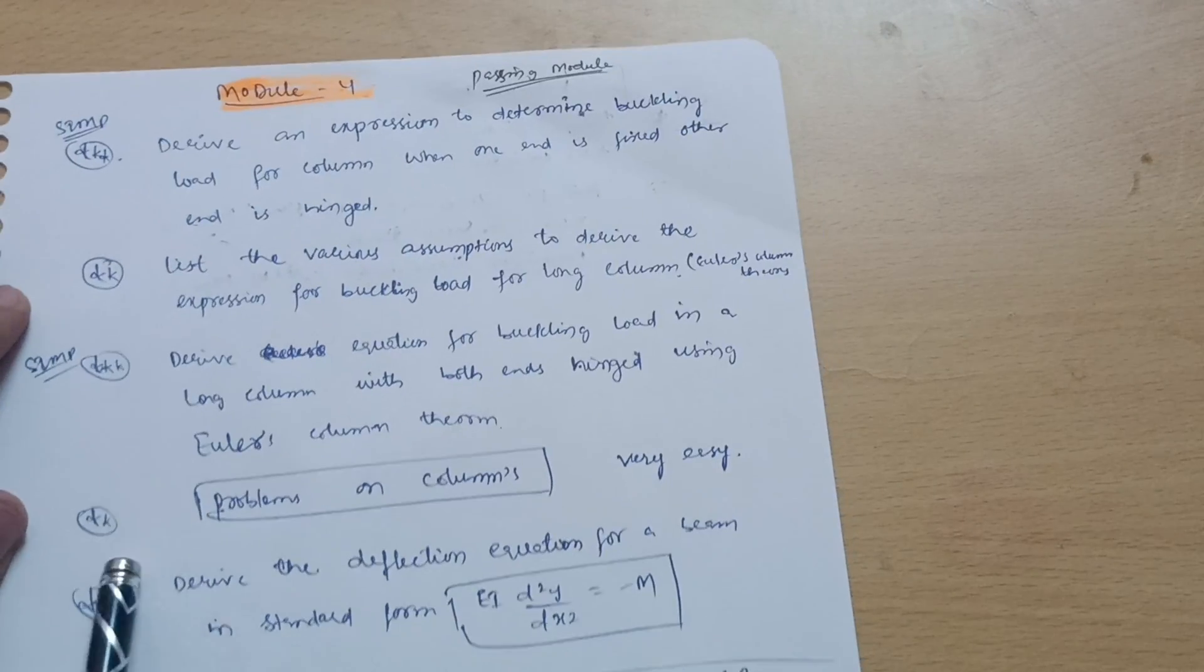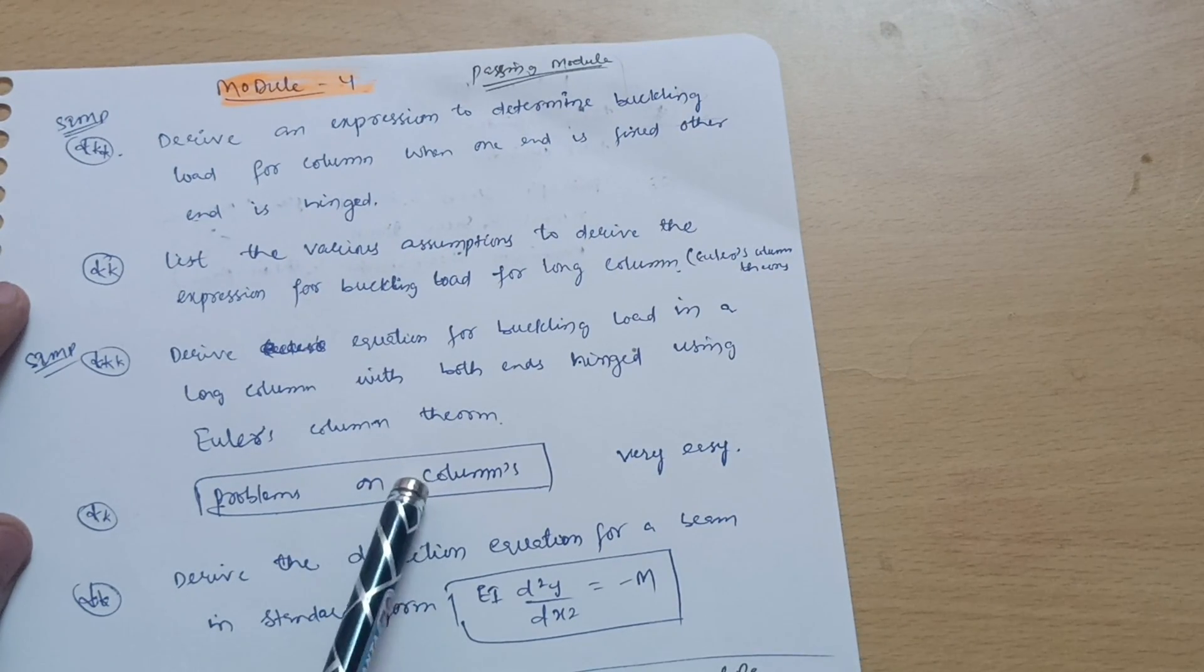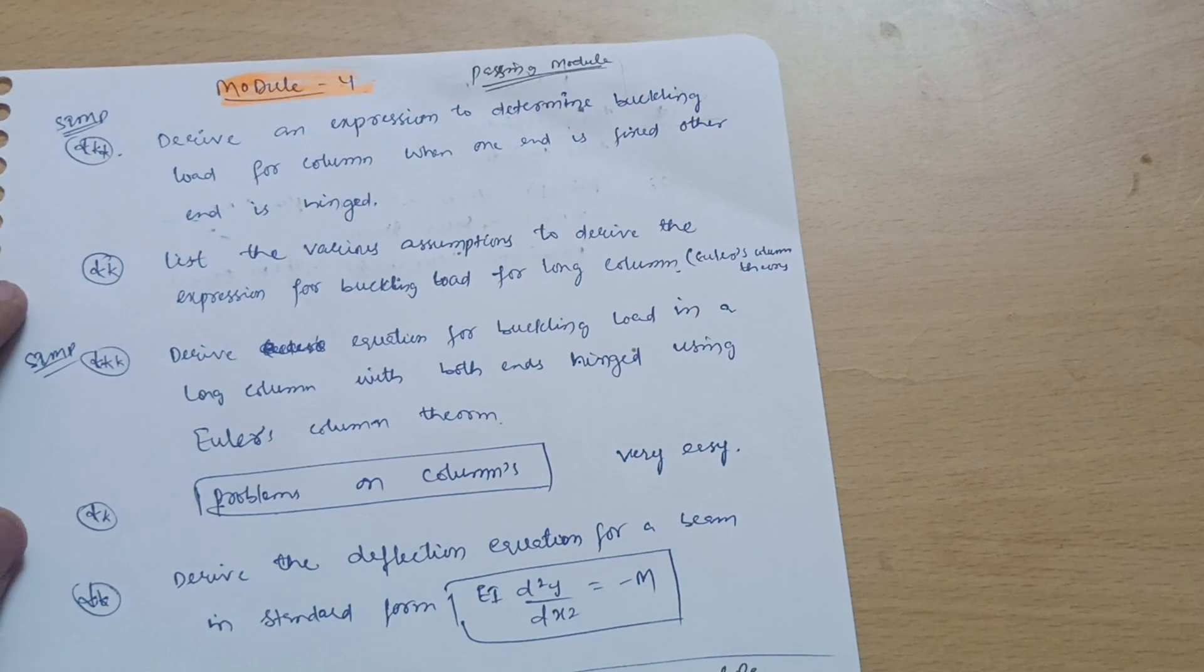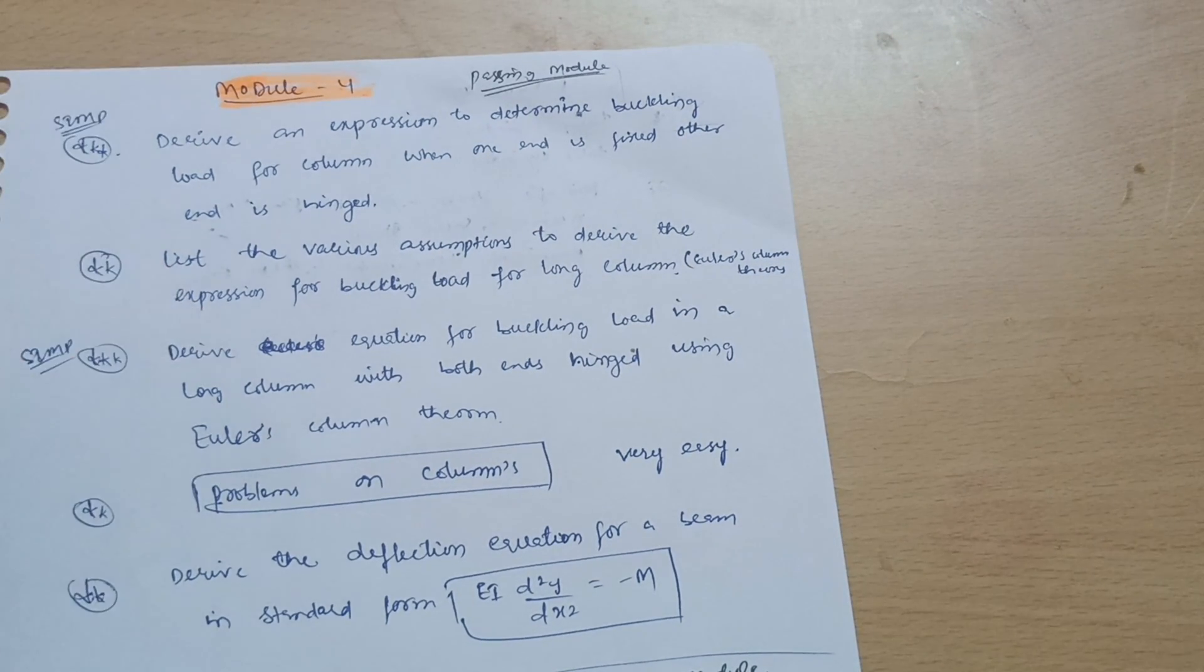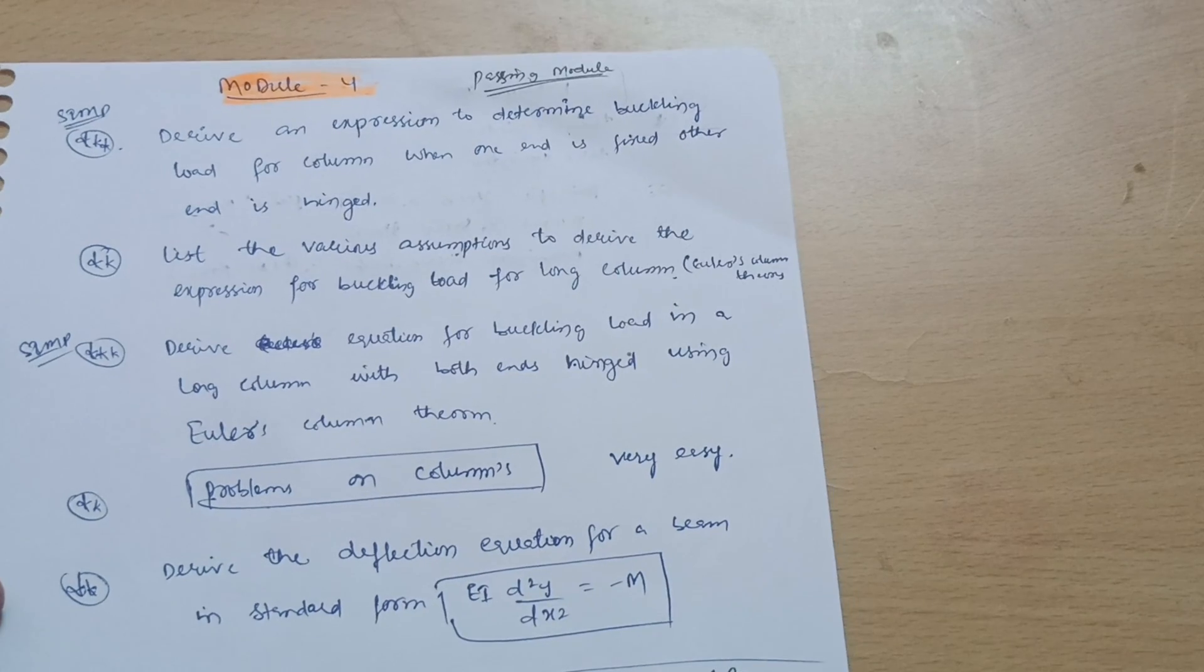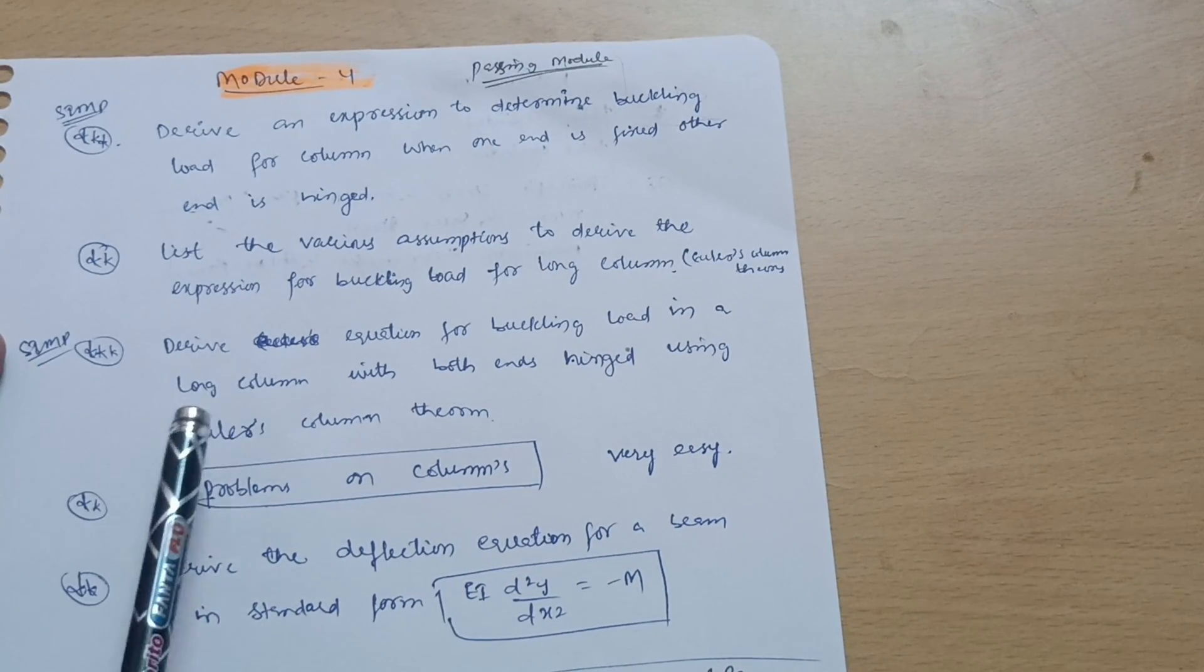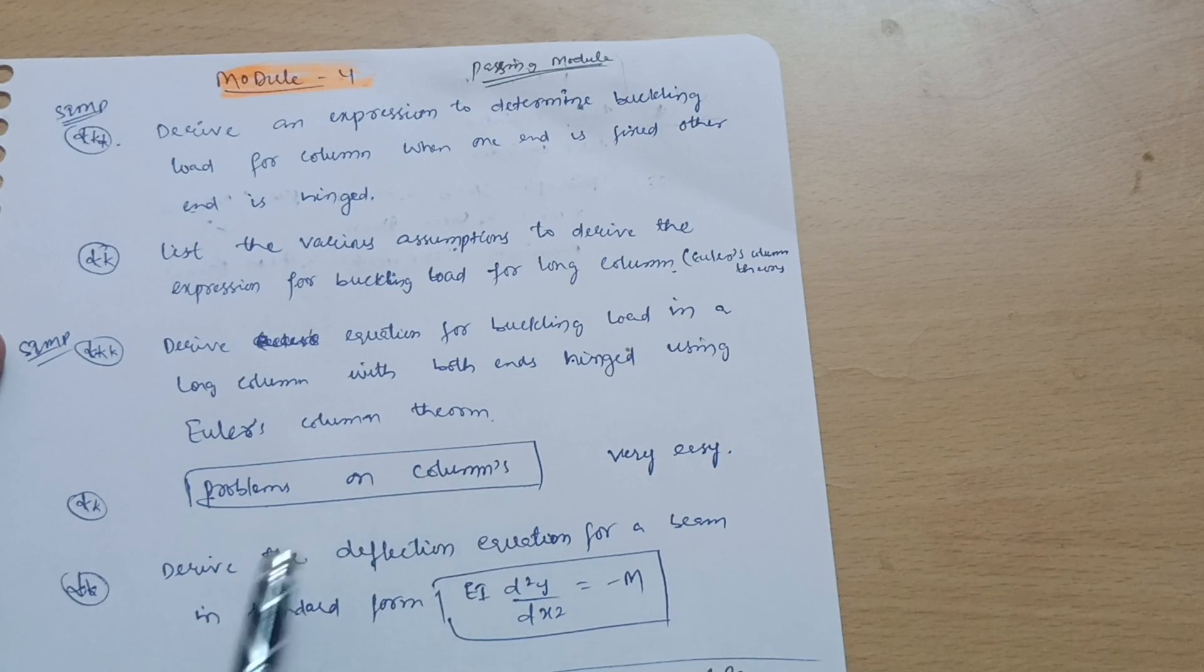Next is the problems on columns you should go through, which are very simpler ones. As you already know, there are two chapters from each module, so you can go through only one chapter in this particular Module 4. That is your Euler's column theory or columns simply.